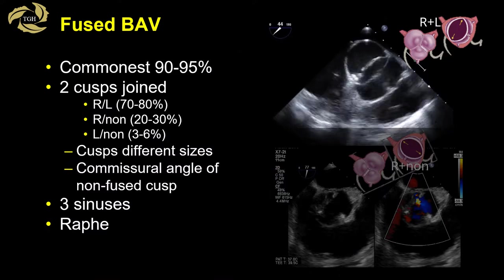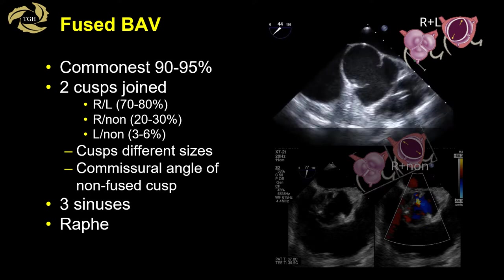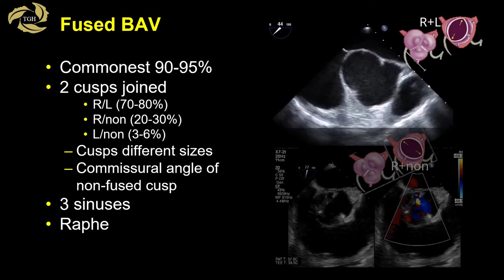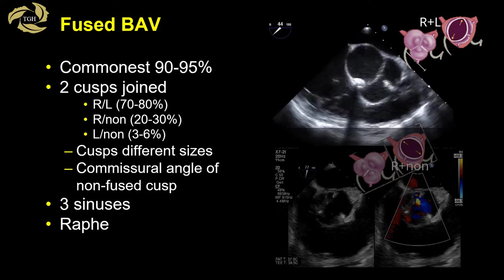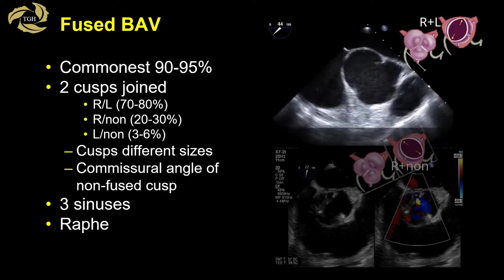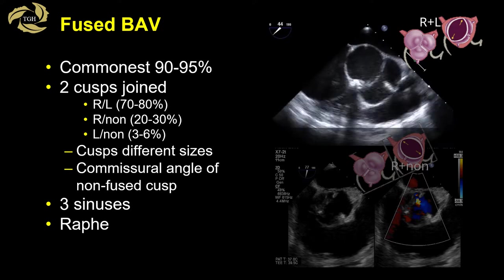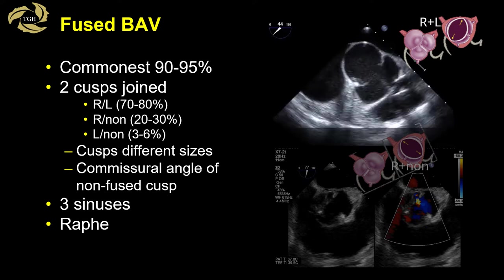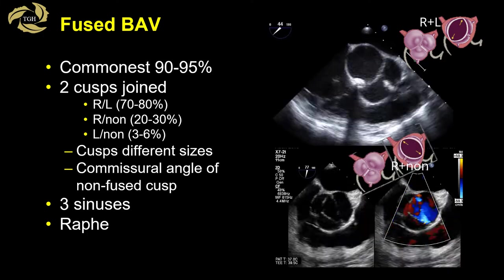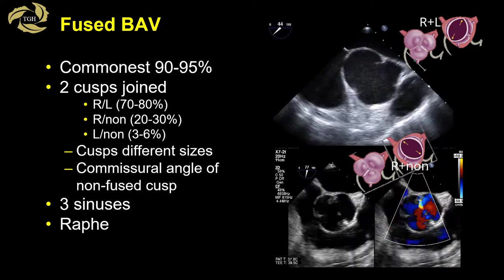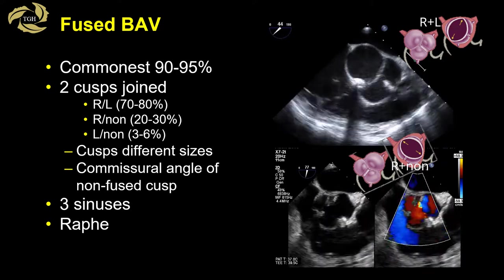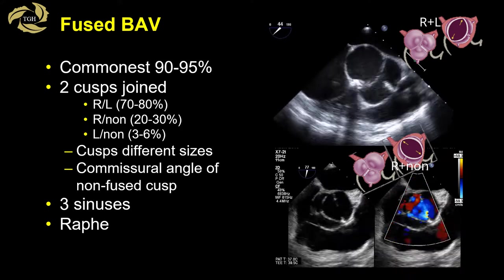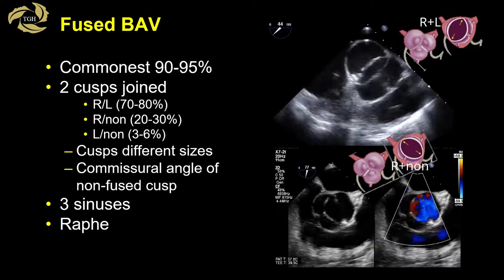The commonest type is the fused bicuspid valve, occurring 90% of the time. The two cusps are co-joined, like the Severs Type 1 classification, with phenotypes being right-left 70 to 80%, right-non 20 to 30%, and the least common, left-non 3 to 6%. The cusps are of different sizes, there are three sinuses, and a raphae can be identified in the conjoined cusps. The commissural angle of the non-fused cusp is an important determinant of repairability.